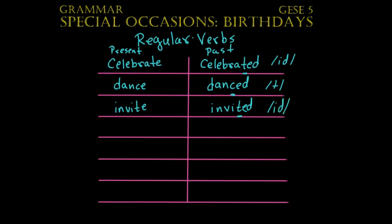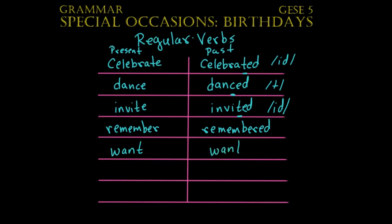Let's look at the next verbs. Another verb that you could use is remember, and we would say remembered. Another verb that you could use is want, so here we could say wanted. You could also use the verb wait, and that would be waited. And finally, we could use the verb wish, and that would be wished.